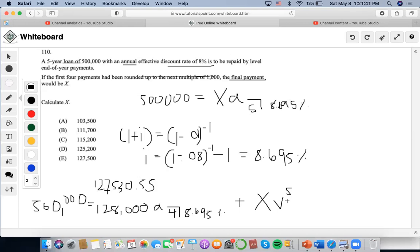So again, $128,000. So $500,000 minus $417,000, multiply that by 1.08695 to the 5. So I'm going to end up getting $125,207.52. So I'm going to cross this down, cross this down, cross this down. So I'm going to end up getting D as the answer.